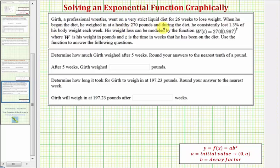Girth, a professional wrestler, went on a very strict liquid diet for 26 weeks to lose weight. When he began the diet, he weighed in at a healthy 270 pounds, and during the diet he consistently lost 1.3 percent of his body weight each week. His weight loss can be modeled by the function W(t), where W is his weight in pounds and t is the time in weeks he has been on the diet. We want to use this function to answer the following two questions.